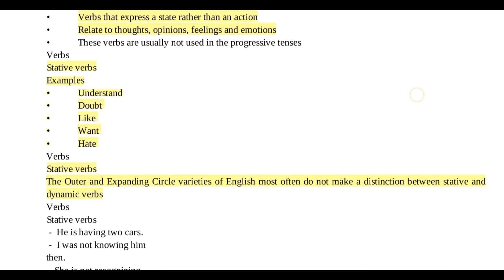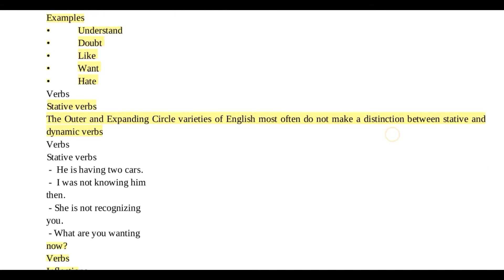Outer and expanding circle varieties of English most often do not make a distinction between stative and dynamic verbs۔ Dynamic verb میں واقعی کوئی action ہو، جیسے کسی کو hit کرنا یا بھاگنا — یہ سب کسی action کو show کرتے ہیں، اس لیے یہ dynamic verbs ہوتے ہیں۔